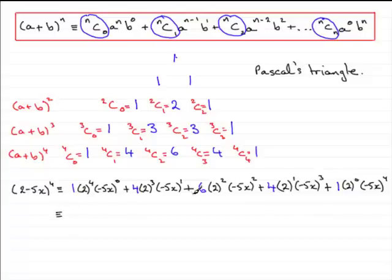All we need to do is just tidy this up. I'll leave it to you just to check my results, but what you should find is that you get 16 minus 160x plus 600x squared, and then minus 1000x cubed, and then plus 625x to the power 4.